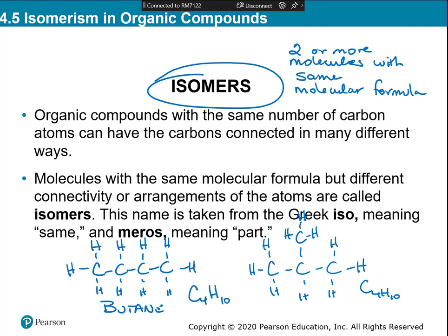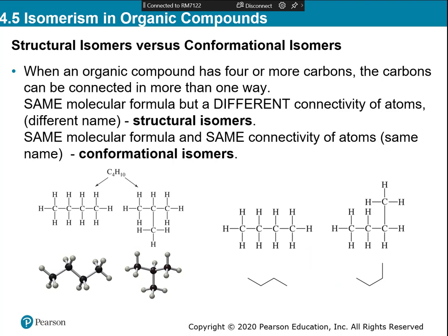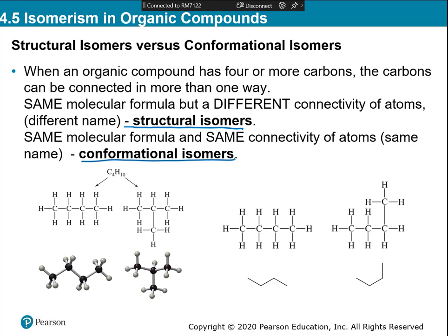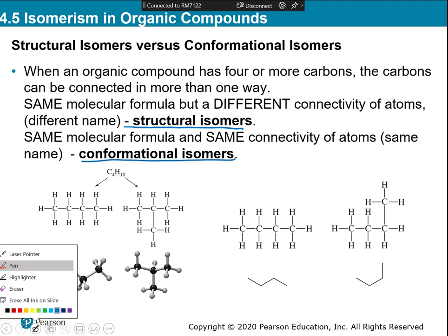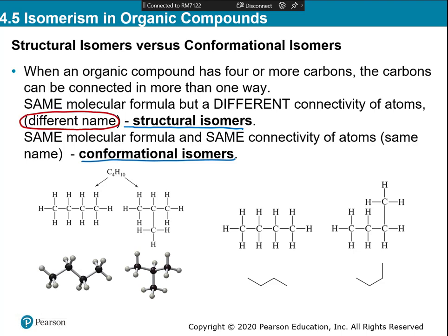You can define isomers more specifically as either structural isomers or conformational isomers. What I just drew is a structural isomer. Structural isomers are when you have two or more molecules with the same formula but they're put together differently — so they're going to have different names. You can tell a structural isomer from a conformational isomer by naming them: if they have the same name, they're conformational isomers; if they have different names, they're structural isomers.